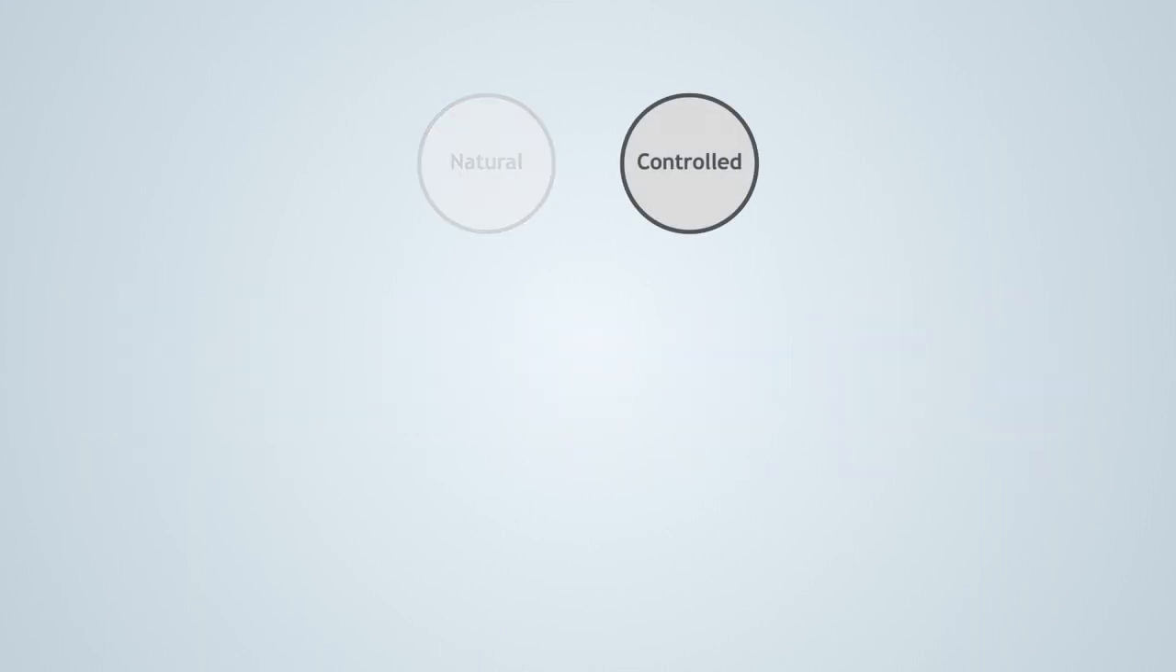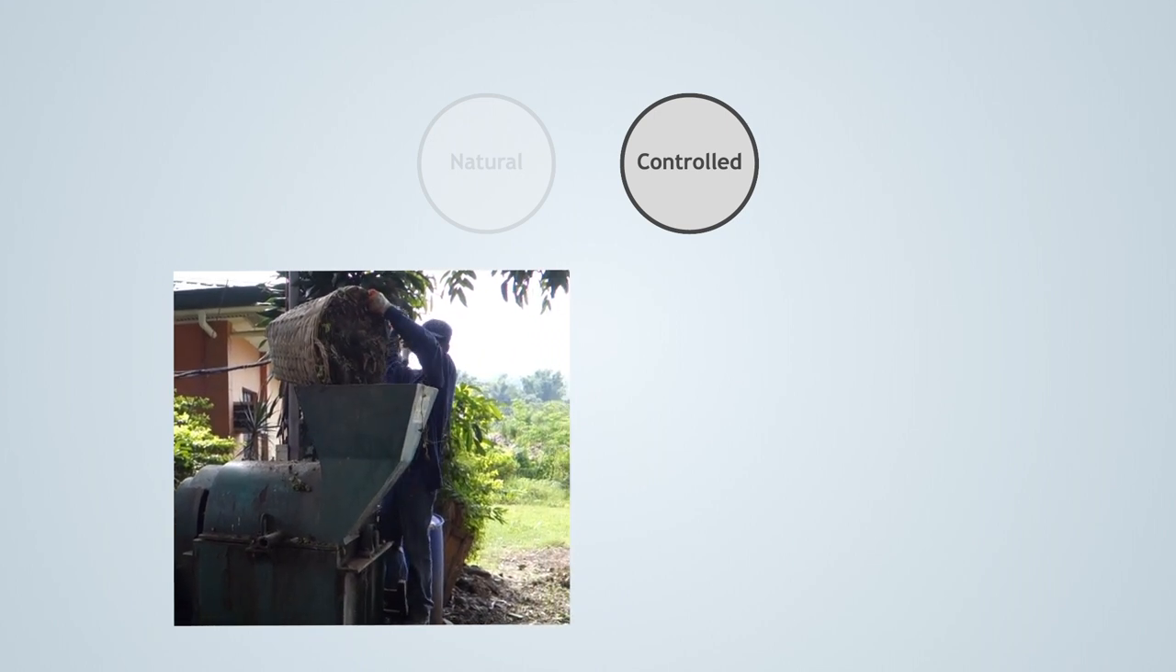When controlled, first operators break down large particles through grinding, shredding, or chopping, as shown in the video, and then they prepare the pile. Breakdown in this case is a preliminary step. Of course, the controlled breakdown is much faster than the natural breakdown.